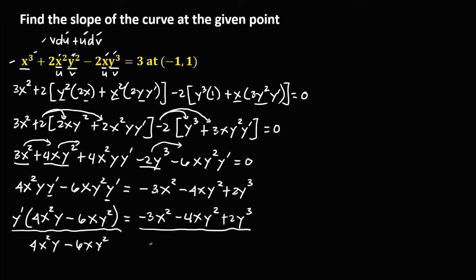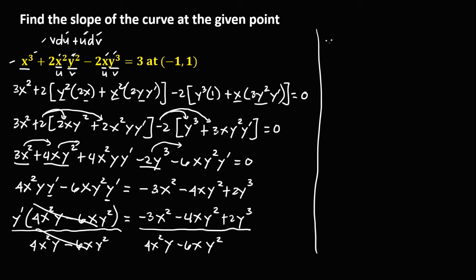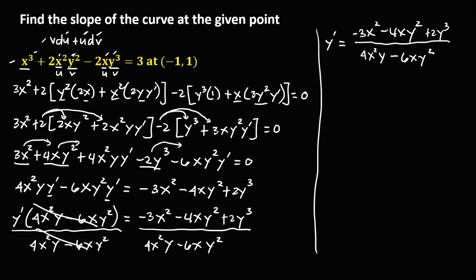Then factor out y prime — put this y prime outside — so we have 4x squared times y, then minus 6xy to the power 2, then equals negative 3x squared minus 4xy squared plus 2y to the power 3. Then divide both sides by 4x squared y minus 6xy squared. So y prime equals negative 3x squared minus 4xy squared plus 2y to the power 3, over 4x squared times y minus 6xy squared.